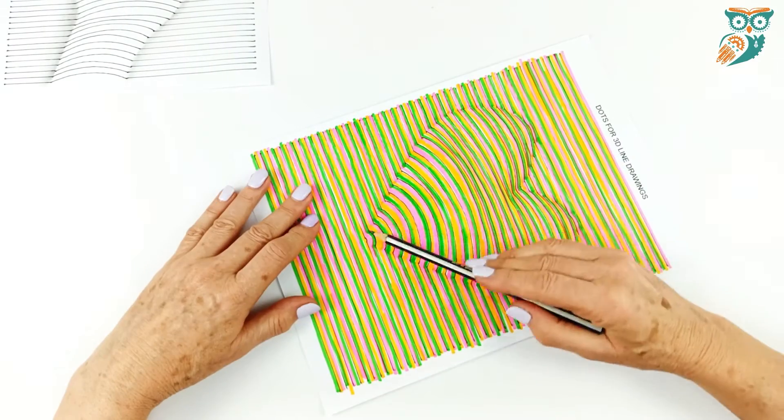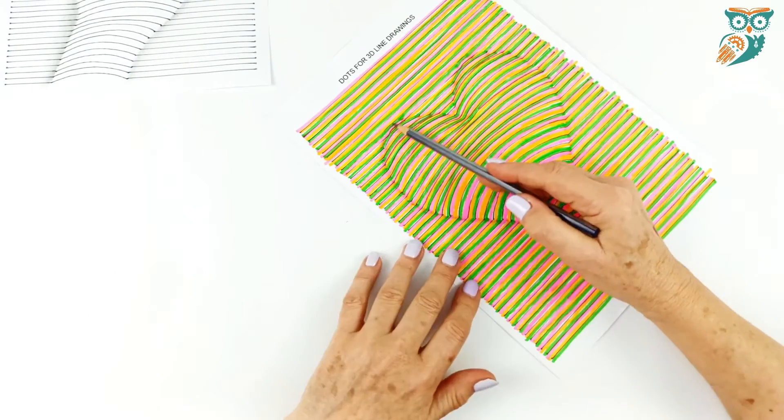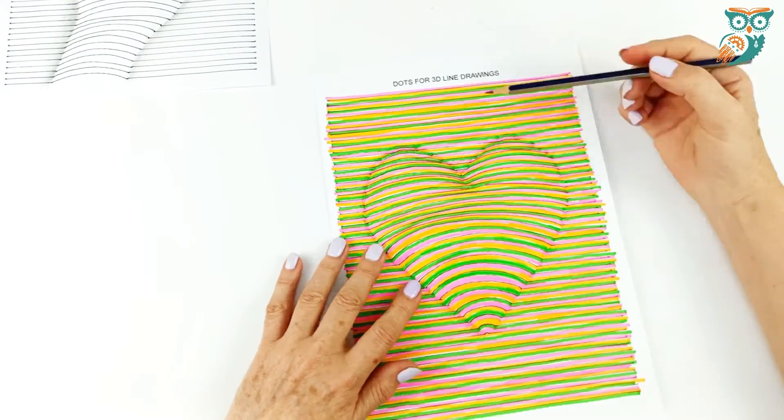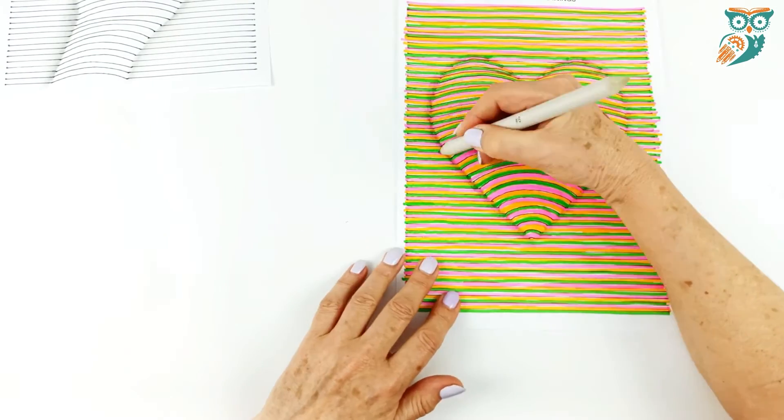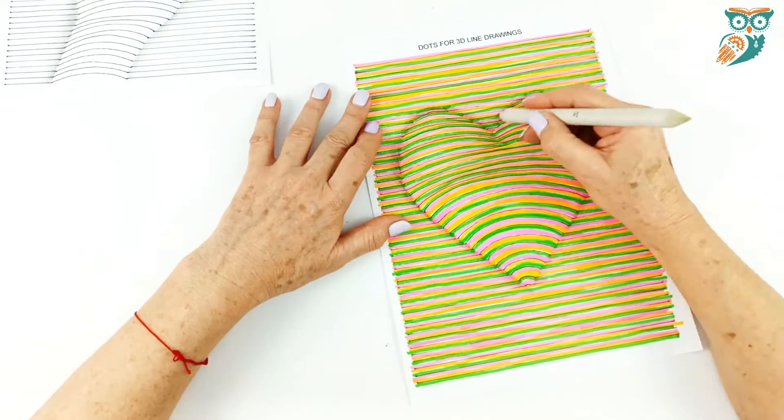So you can also color your 3D images. Here we've used different colors. We've used pink, green and yellow. And if you just stagger those and continue with the curved lines where it's curved and straight where it's straight you'll end up with a really nice image.